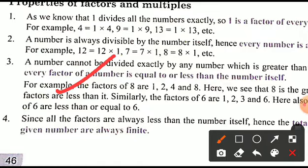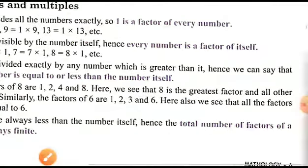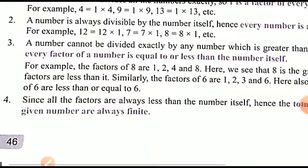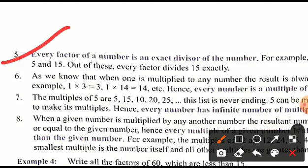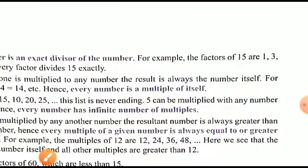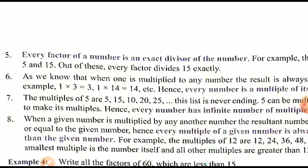For example, the factors of 8 are 1, 2, 4, and 8 — all are less than or equal to 8. Since all factors are always less than or equal to the number, the total number of factors of any given number is always finite. Also, every factor of a number is an exact divisor of that number — for example, the factors of 15 are 1, 3, 5, and 15, and each divides 15 exactly.